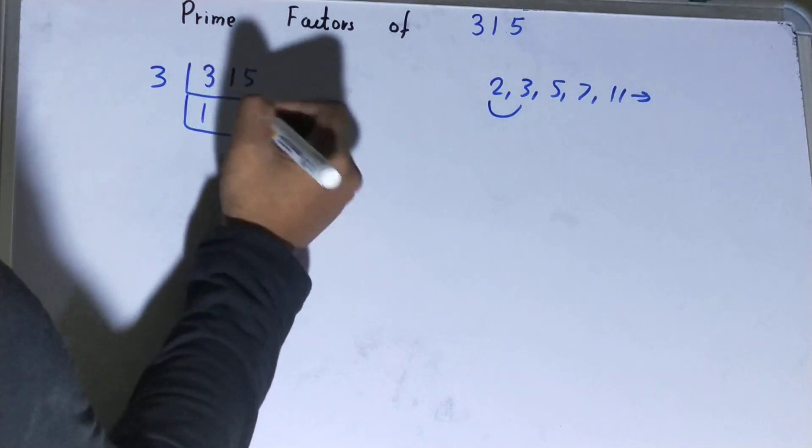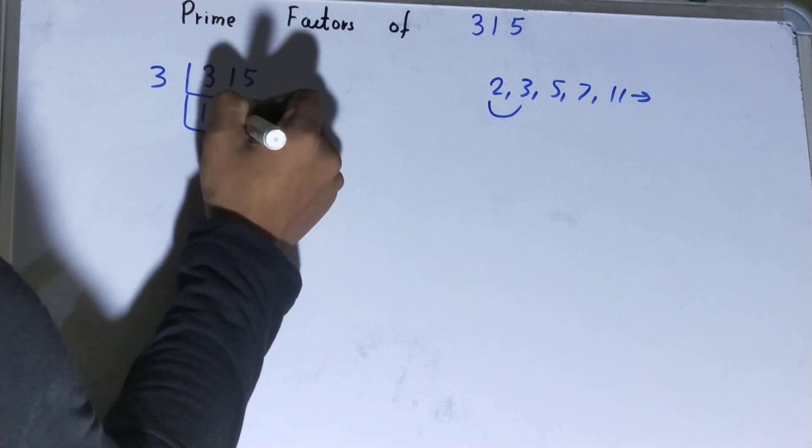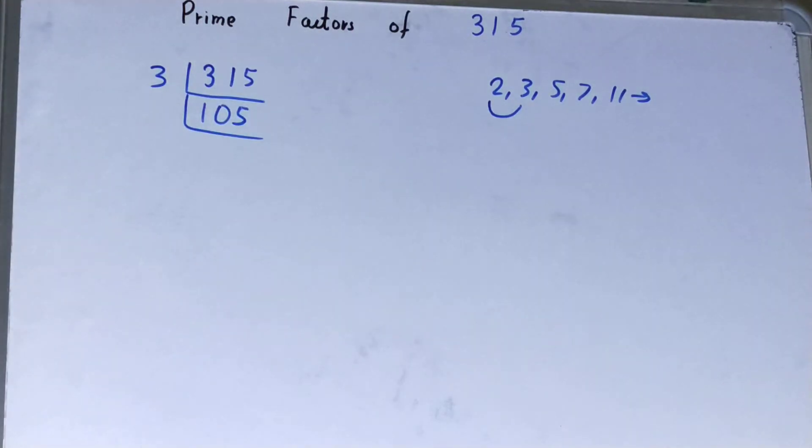Now is this 105 further divisible by 3? Let's see: the sum of digits is 9, yes it is divisible. So divide it, it will go in 35 times.